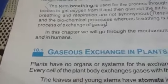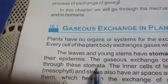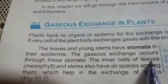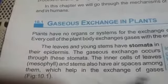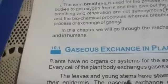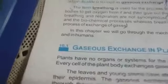The leaves and young stems have stomata in their epidermis, and gas exchange occurs through these stomata. The inner cells of the leaves — the mesophyll — and the stem have air spaces among them, which help the exchange of gases. Stomata are present in both the upper epidermis and the lower epidermis. The lower epidermis has small, minute openings called stomata.